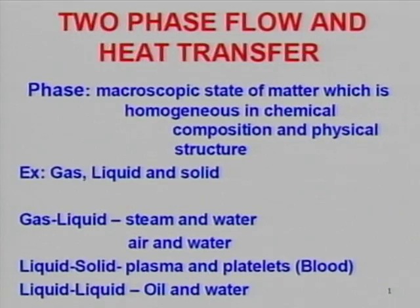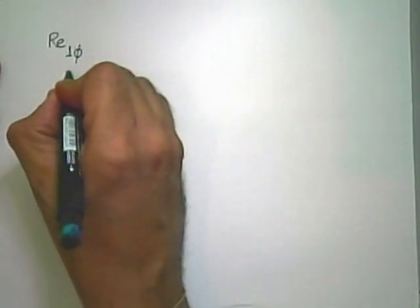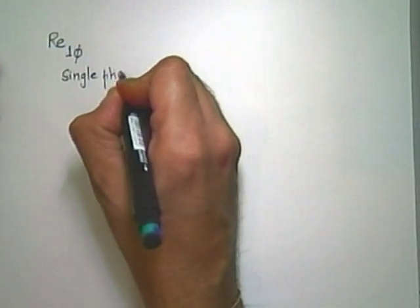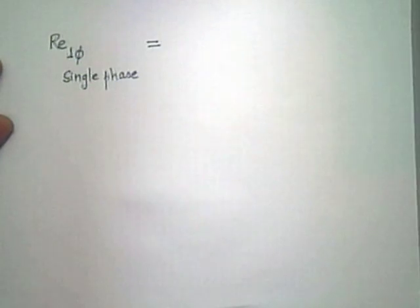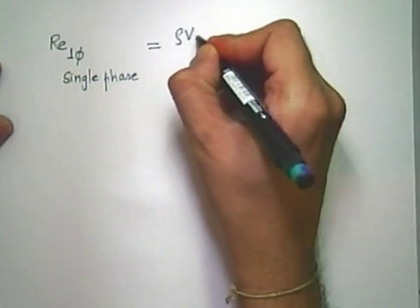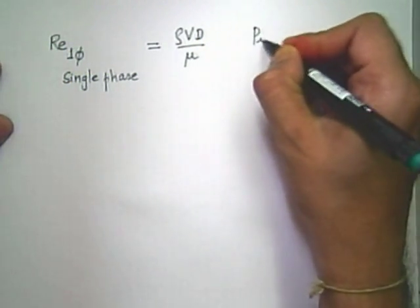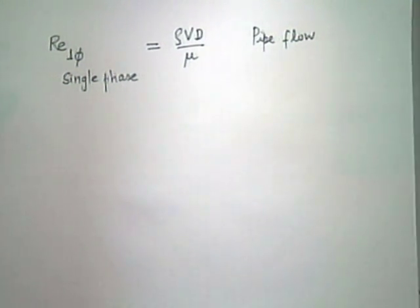There is some difference between these two, and we appreciate that. Now, why does two-phase become suddenly very complicated as opposed to single phase? What is the Reynolds number for single phase? The definition is rho times v times d divided by mu — let us say it is pipe flow of water, where d is the diameter and v is the average or mean velocity.